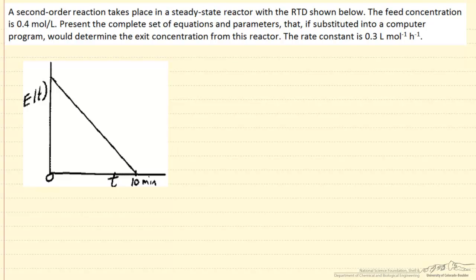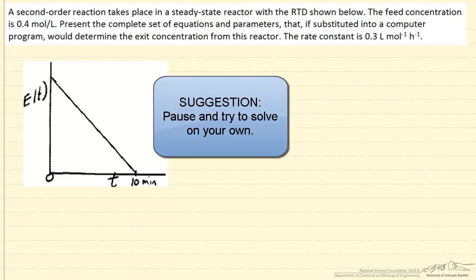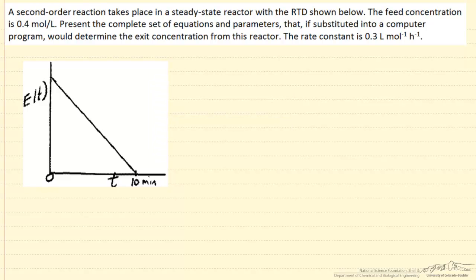What we want to do here is present the equations that, if we substitute into a computer program — for example one that would solve ordinary differential equations — we could determine the exit concentration from this reactor, or the conversion, given the rate constant. The way we're going to model this is as segregated flow: we look at this as a large number of very small batch reactors that move through and reaction takes place in the batch reactor.